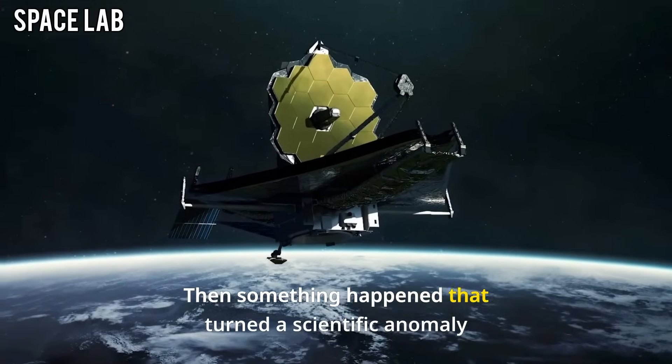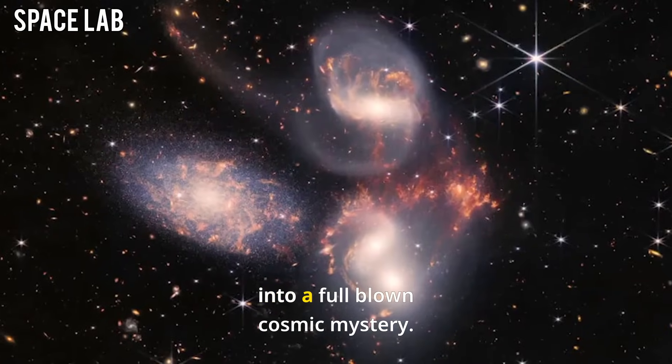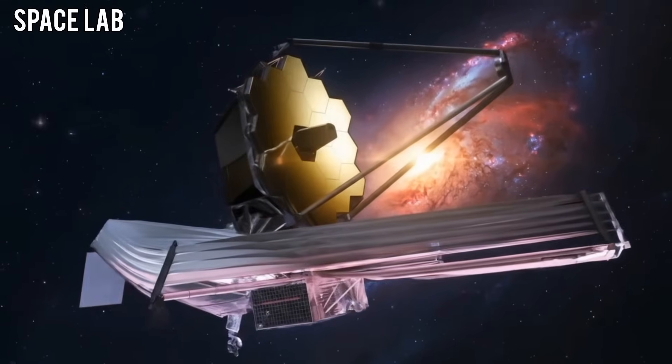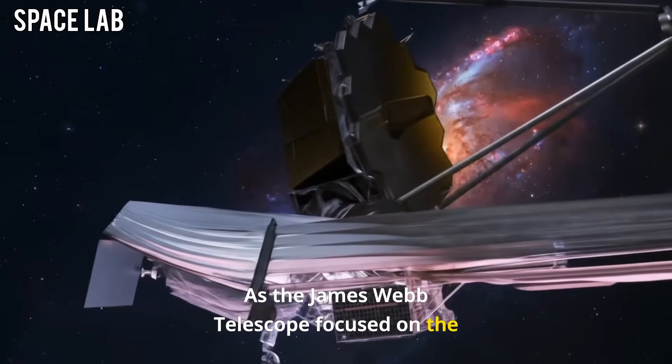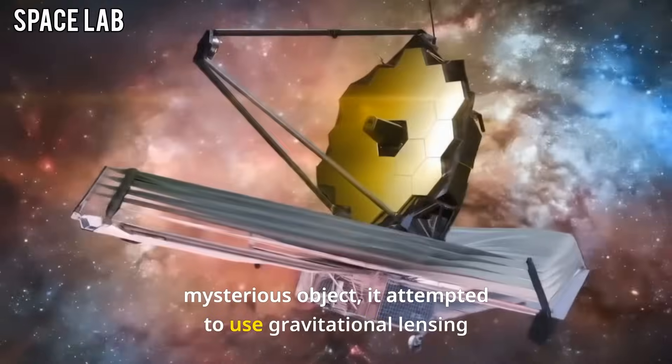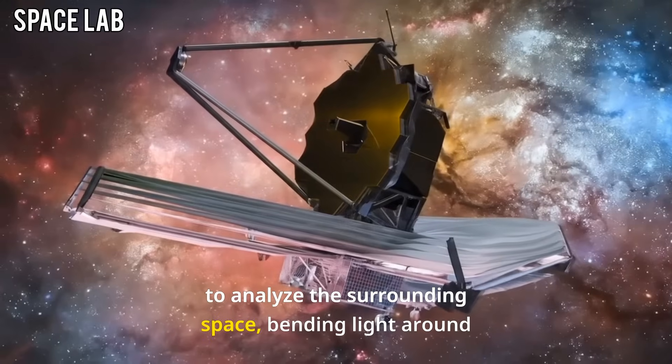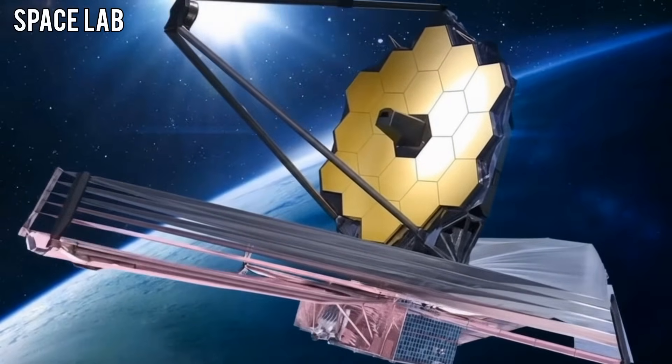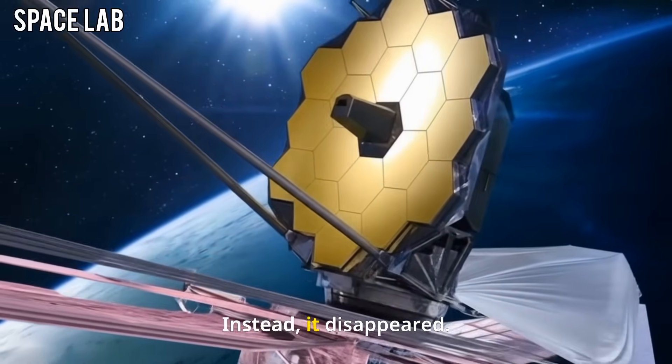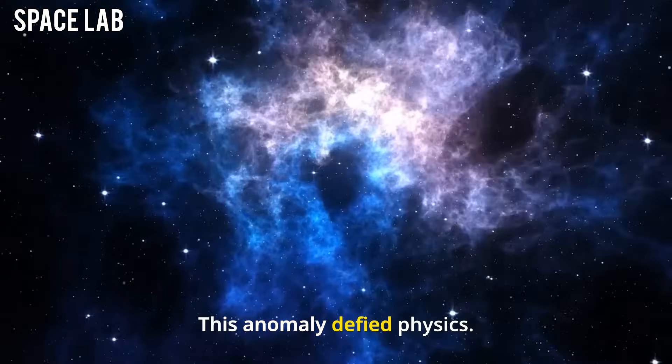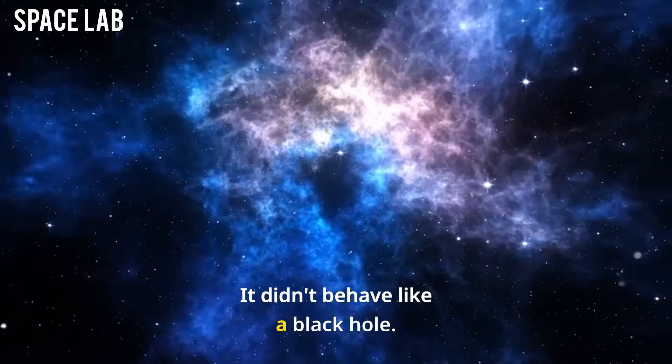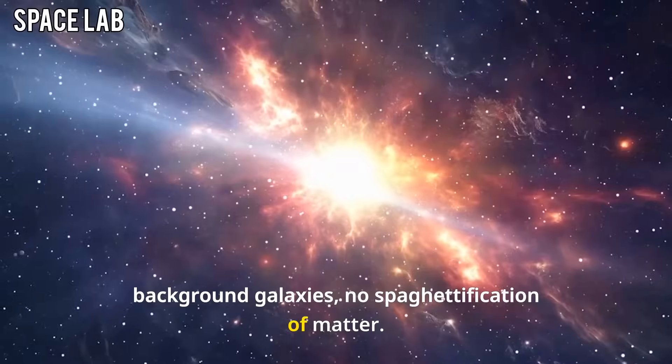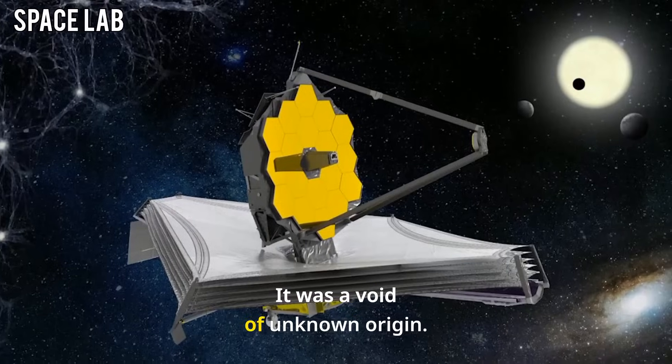Then something happened that turned a scientific anomaly into a full-blown cosmic mystery. The object responded. As the James Webb Telescope focused on the mysterious object, it attempted to use gravitational lensing to analyze the surrounding space, bending light around it to see beyond. But the lensing effect failed. Light didn't bend. Instead, it disappeared. This anomaly defied physics. It didn't behave like a black hole. There was no X-ray emission, no distortion of background galaxies, no spaghettification of matter. It was a void of unknown origin.